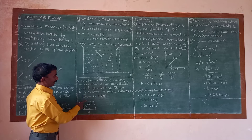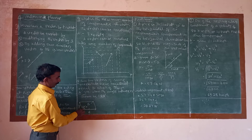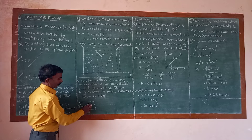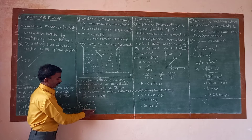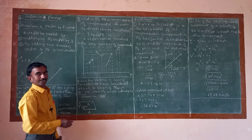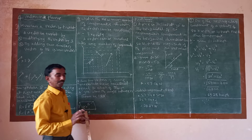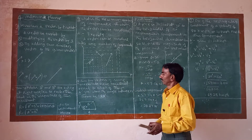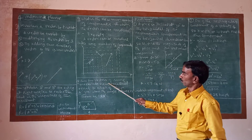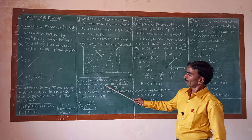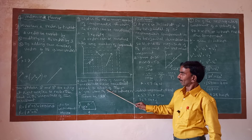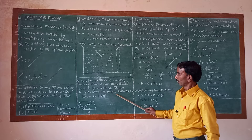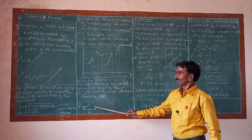Can two vectors of the same magnitude have a resultant equal to either of them? Yes, when the angle between them is 120 degrees.